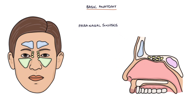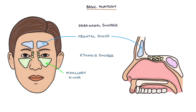There are four sets of paranasal sinuses. The frontal sinuses, which are above the eyebrows. The maxillary sinuses, which are either side of the nose below the eyes. The ethmoid sinuses, which are in the ethmoid bone in the middle of the nasal cavity. And the sphenoid sinuses, which are in the sphenoid bone at the back of the nasal cavity.